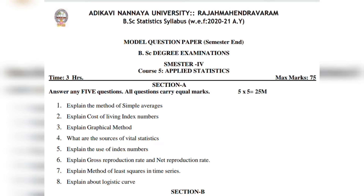Ok, first aya tēn shorts: explain the method of simple averages, cost of living index number, graphical method. What are the sources of vital statistics? Explain the use of index numbers, gross reproduction rate and net reproduction rate. Method of least squares in time series, explain about logistic curve.